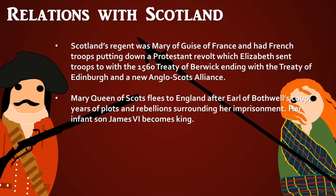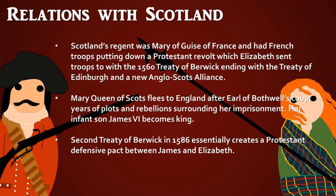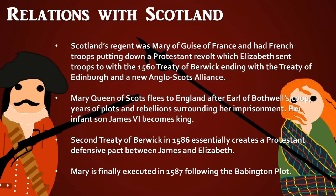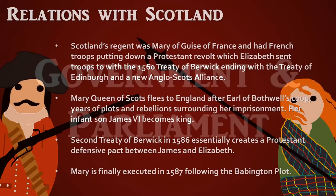Mary Queen of Scots fled to England in 1568, seven years after returning to Scotland in 1561, and was imprisoned there. Her infant son James VI became king of Scotland, and as a Protestant this led to better relations — for example, in 1586 the Second Treaty of Berwick created a Protestant defensive pact between James and Elizabeth. In 1587, Mary was finally executed following her involvement in the Babington Plot.